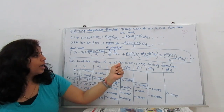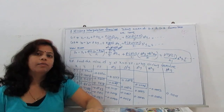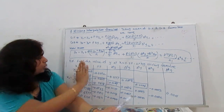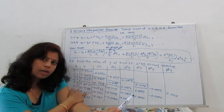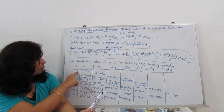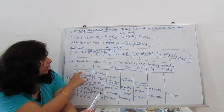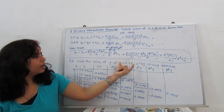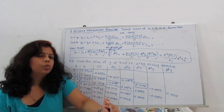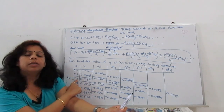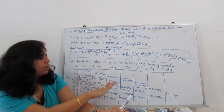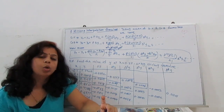Example: Find the value of y at x = 0.33 using the Stirling formula, given a table of x and y values. The table gives x from 0.1 to 0.7 and the corresponding y values. We need to find y at x = 0.33, so we choose x0 = 0.3 as it is the nearest point to 0.33. This will be our x0 for constructing the central difference table.